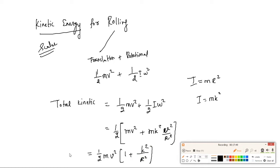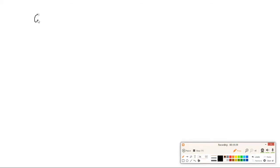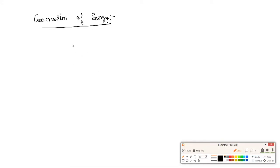This is the fundamental equation for total kinetic energy of rolling motion: KE = ½mv²(1 + k²/r²). Conservation of energy is also applicable for rolling motion: initial PE + initial KE = final PE + final KE.